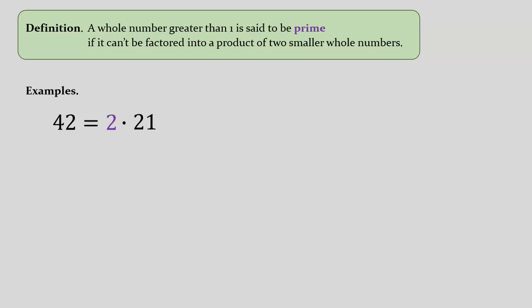What about the second factor, 21? Well, that one clearly is not prime, since 21 can be rewritten as 3 times 7. After a little reflection, we see that 3 and 7 are themselves both prime, so I'll paint them purple too.